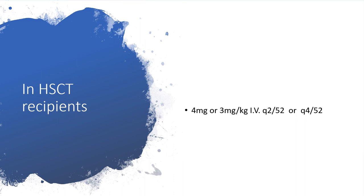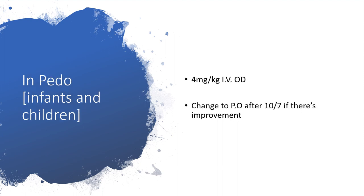In oncology, pentamidine is useful in hematopoietic stem cell transplant recipients; you can give 4 mg or 3 mg/kg intravenously every 2 weeks or every 4 weeks. In pediatric patients, particularly infants and children, you can give pentamidine at 4 mg/kg intravenously once daily, and can change to oral inhalation via nebulizer after 10 days if there is improvement.